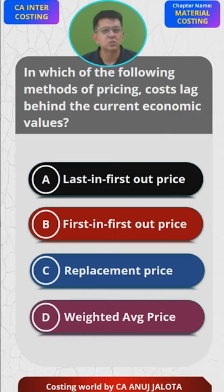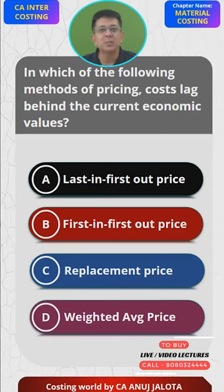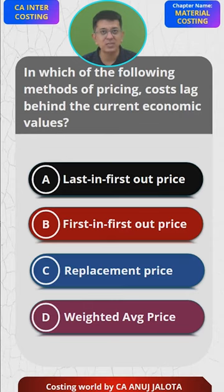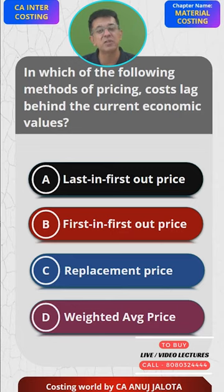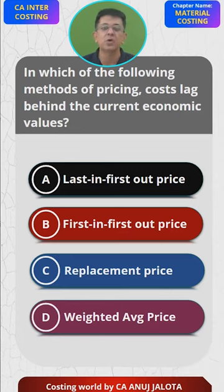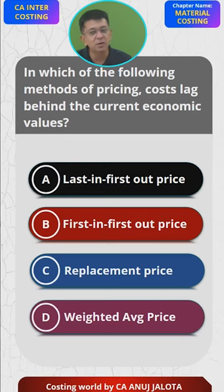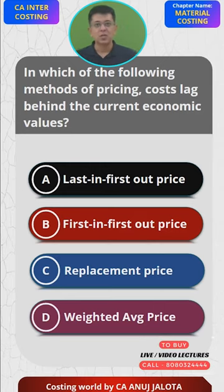But rupees 2 does not represent the current worth of those goods. So in this case, costs lag behind the current economic value. This statement is especially true when there is an inflationary trend in raw materials.